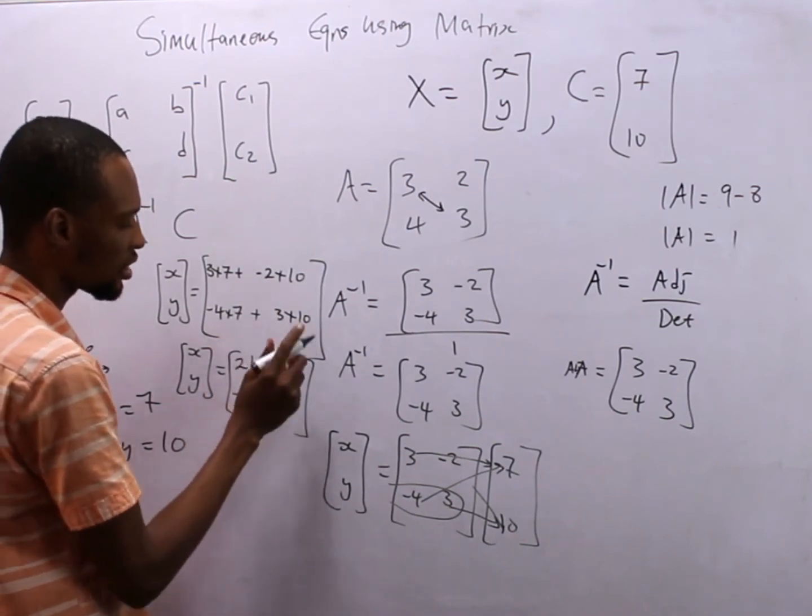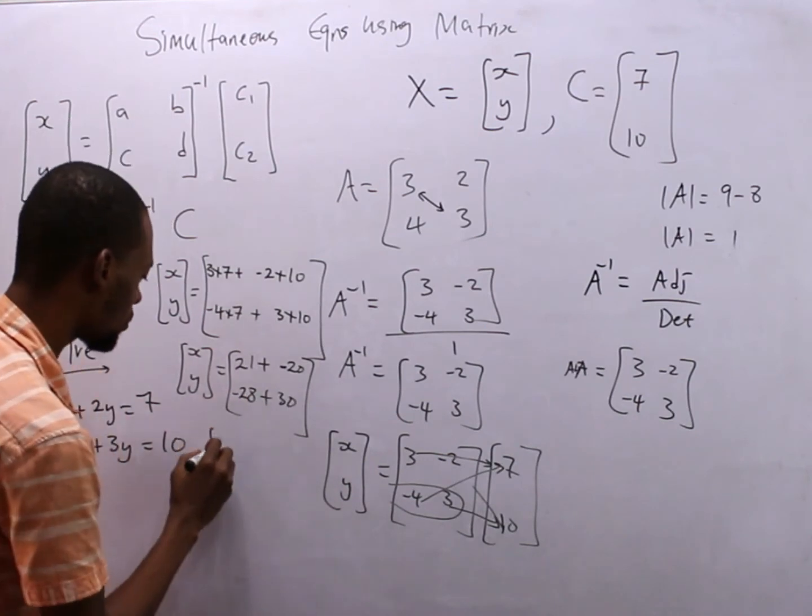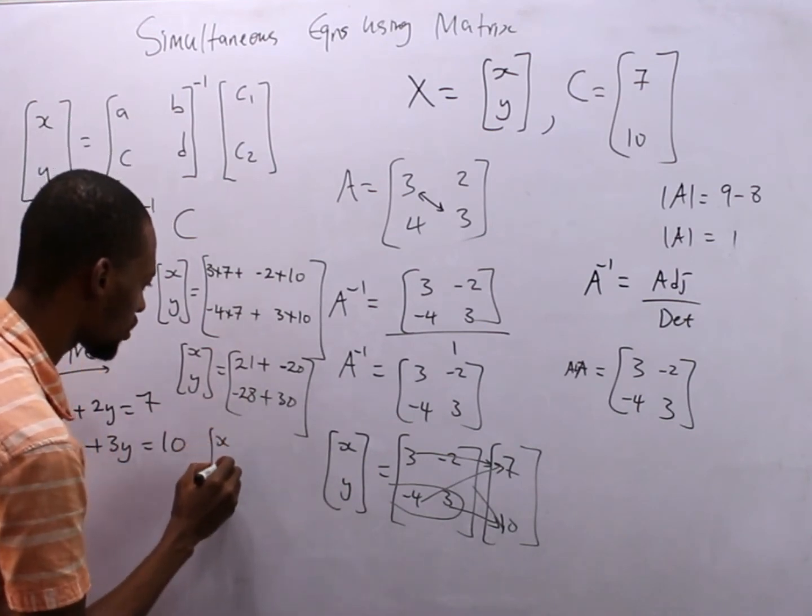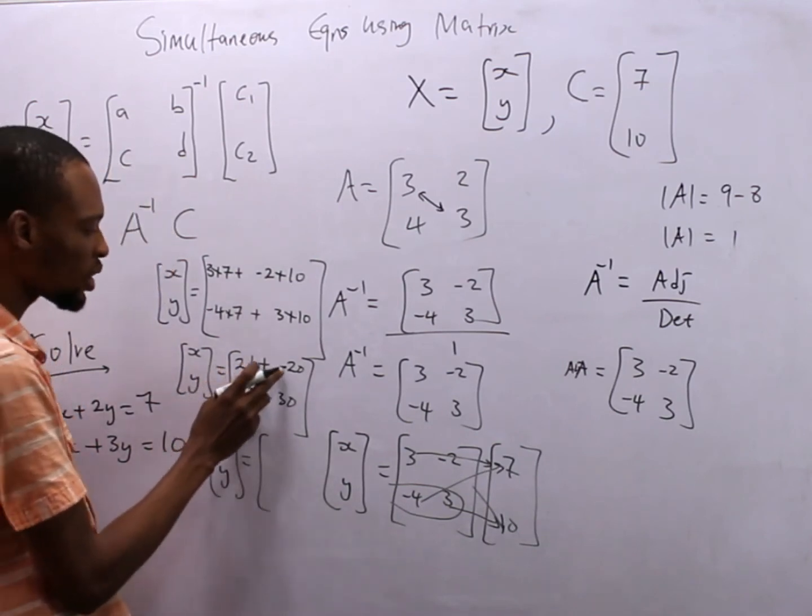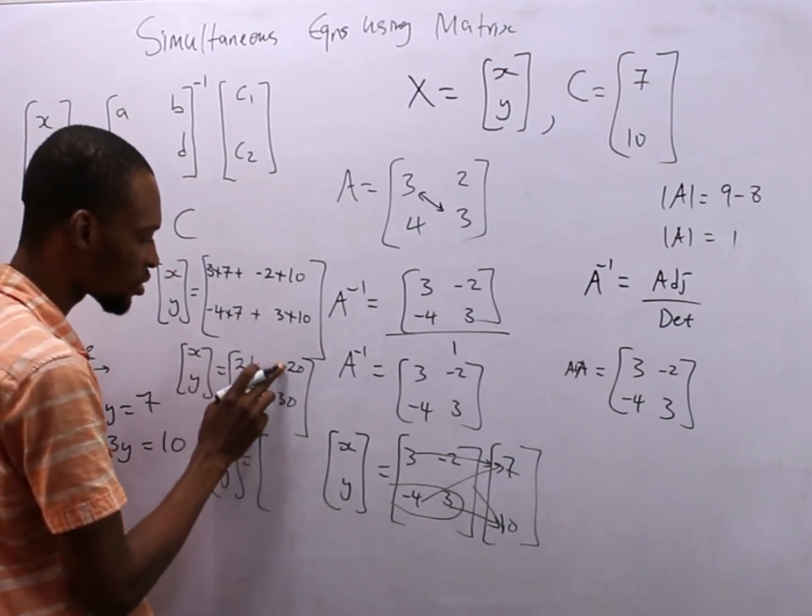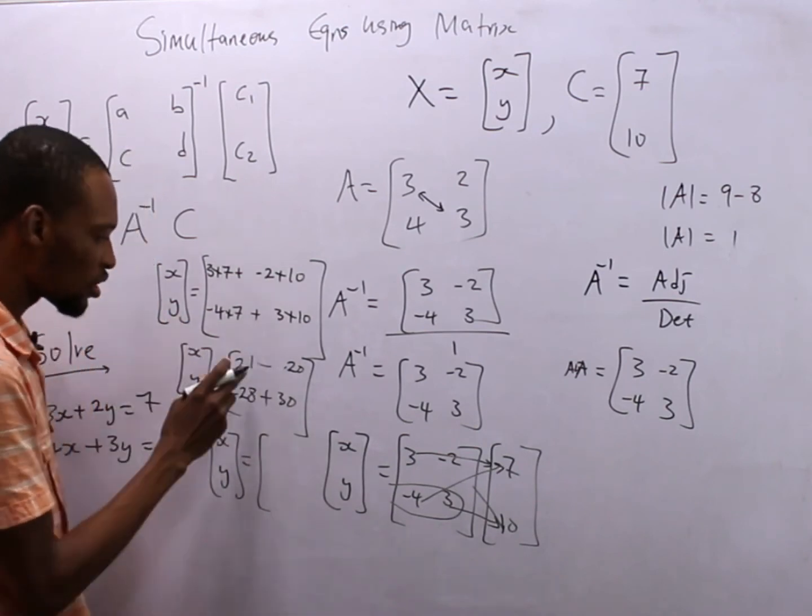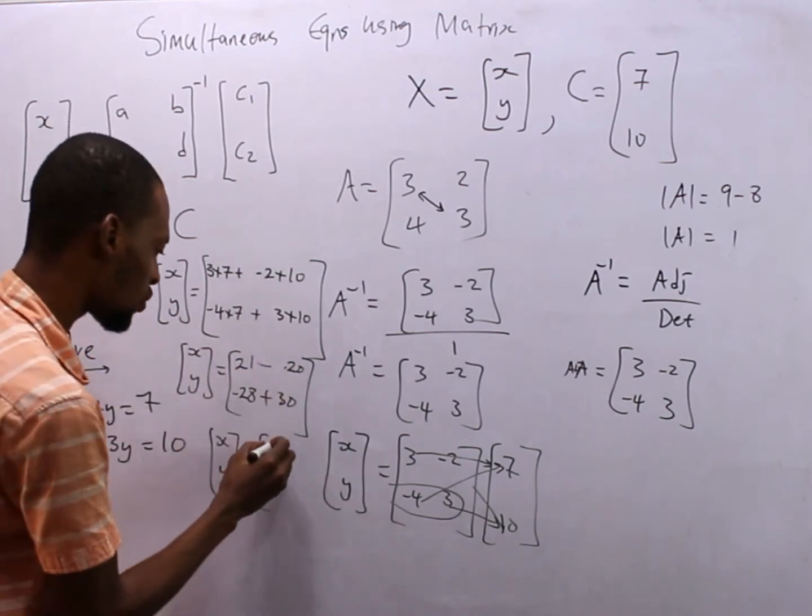So here is 7 times 4, that's minus 28, so this minus 28 plus 3 times 10 is 30. So x, y equals 21 plus, plus times minus is minus, so this is minus, 21 minus 20 is 1. Minus 28 plus 30 is 2.